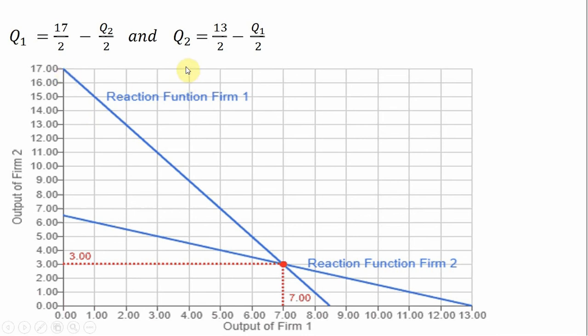All right, we'll basically do the same thing for Firm 2's reaction function. We'll start by setting the output of Firm 1 equal to 0. So if Firm 1's output is 0, Q₂ is 13 divided by 2, which is 6.5. So we found a point right here, 6.5 or 13 divided by 2.